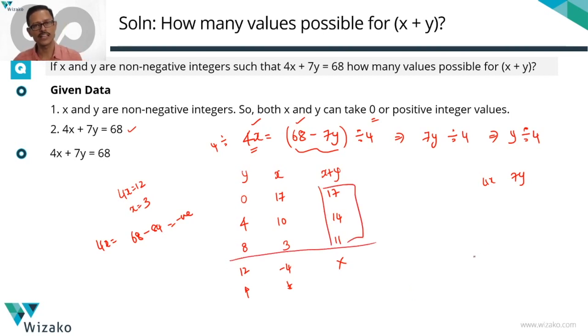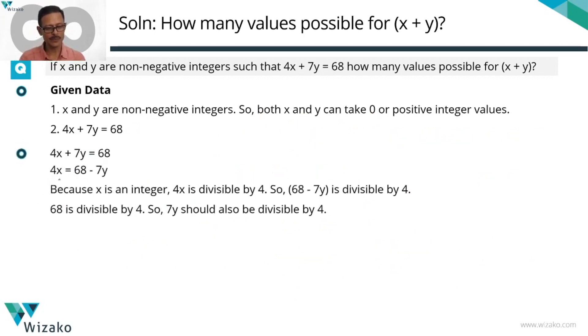So how many different values do we have for x plus y? We have three different values for x plus y. Quickly summarize this entire discussion in a printed form. We've rewritten this equation. I'm going to read this out.